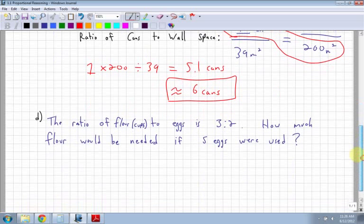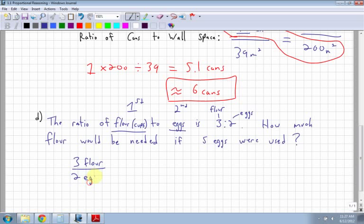Last example here. The ratio of flour, cups of flour to eggs, is 3 to 2. How much flour would be needed if 5 eggs were used? So I have this ratio. I'm going to write it in fraction form so it's a bit easier to see. So I have 3. And remember the ratio of cups, flour comes first, then eggs come second. So that means 3 is flour, 2 is eggs. Flour comes first, eggs come second. So I have 3 cups of flour for every 2 eggs.